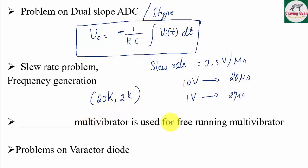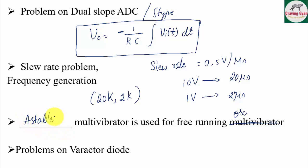Which multivibrator is used for a free-running oscillator? You use an astable multivibrator for free-running oscillation. For memory, you use a bistable multivibrator. For trigger pulse generation, you use a monostable multivibrator.